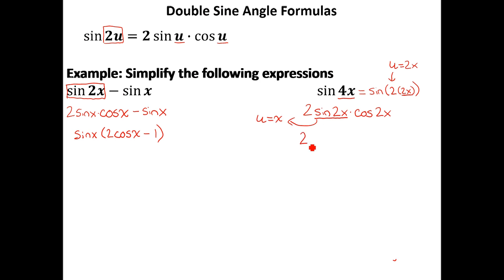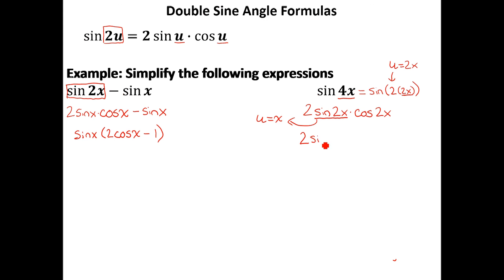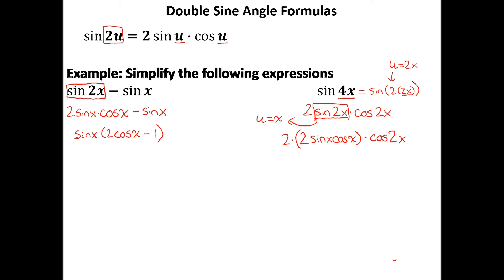So I'm going to replace sine of 2x with 2 times the sine of x times the cosine of x, all times the cosine of 2x. Now you might be wondering how to get rid of the cosine of 2x — what we're going to do is use the double angle cosine formula.